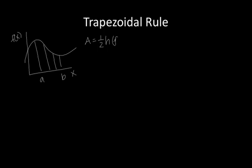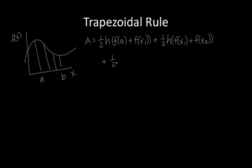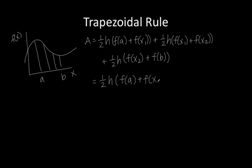The first trapezoid has bases f of a plus f of x1. Then plus one-half the same height times f of x1 plus f of x2, and plus one-half the height times f of x2 plus f of b. We then factor out one-half h, giving us: one-half h times f of a plus f of x1 plus f of x1 plus f of x2 plus f of x2 plus f of b.